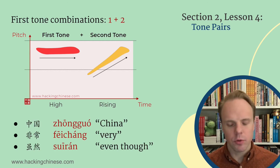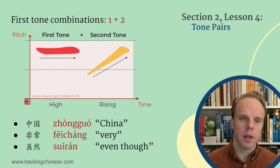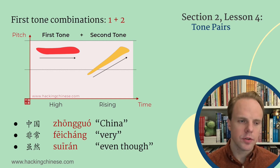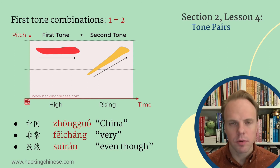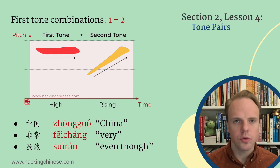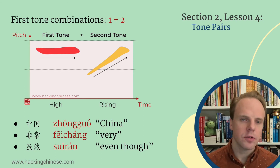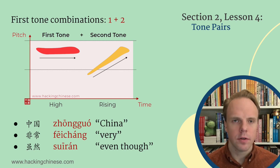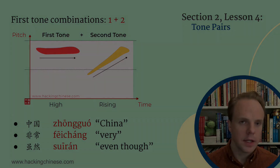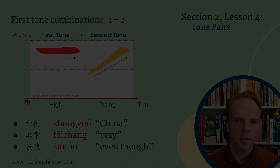Okay, let's go to the first tone plus second tone. So nothing weird here — it's just a straight combination: a high tone plus a rising tone. The first example is 中国 (Zhōngguó) — 中国. So it's a flat then rising tone: 中国. Say it after me: 中国. And then we have 非常 (fēicháng) — 非常.